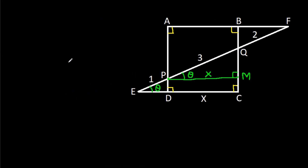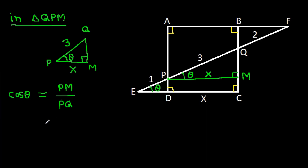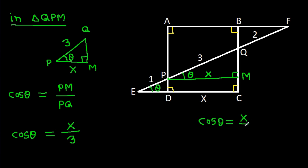Now in triangle QPM, this angle is 90 degrees, this angle is theta, PM is X, and PQ is 3. So cos theta will be equal to PM over PQ, that is X over 3. We get cos theta is X over 3.